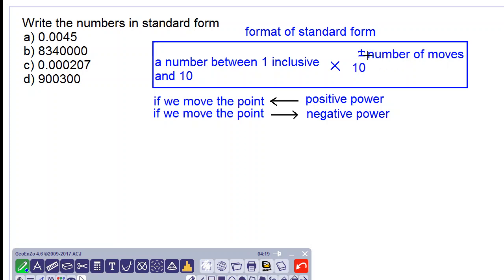Our answer can be positive or negative. If we move the point backwards, following this arrow, we get a positive power of 10. If we move the point forwards, we get a negative power of 10.